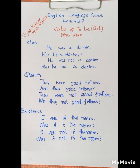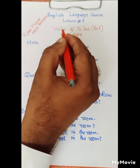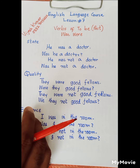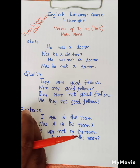In our previous class we discussed present verbs of to be. Now we will discuss past verbs of to be. There are two past verbs of to be and they are 'was' and 'were'. Verbs of to be are used to show state, quality, and existence of the subject but in past time.